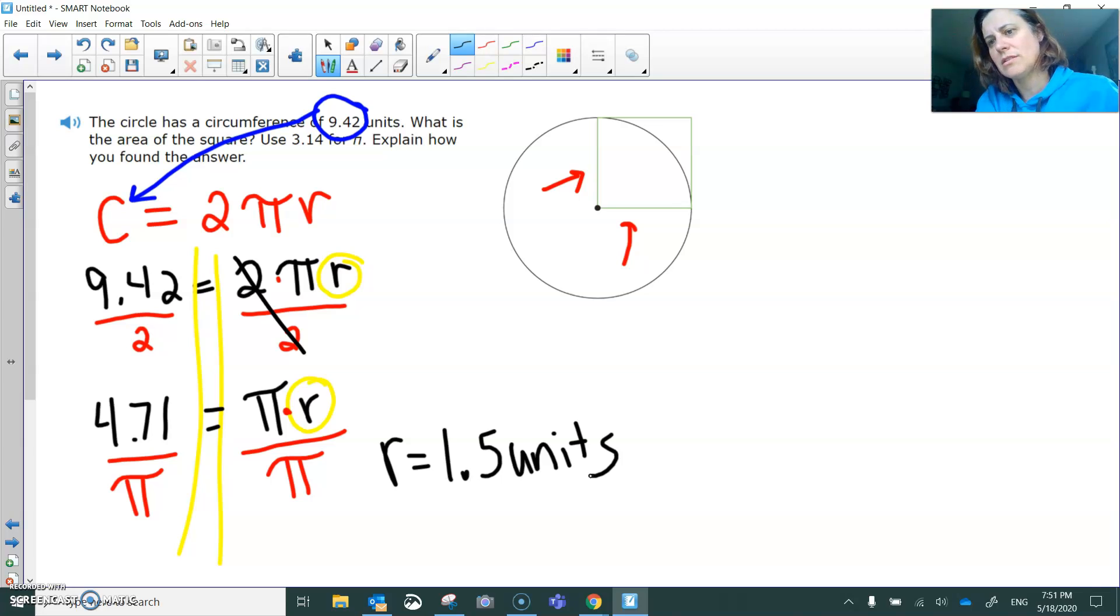Sometimes units are inches, sometimes units are miles, sometimes units are millimeters. And sometimes they don't tell you the units, so you just call them units. So that's the radius. So that means that this distance is 1.5 units, and this distance is 1.5 units. And we know that this shape is a square.